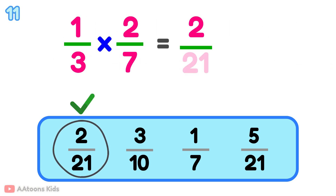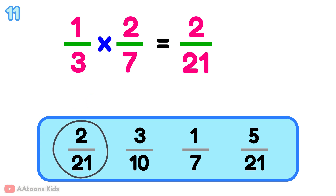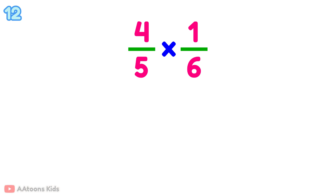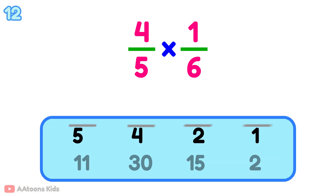6 over 21. What is 4 over 5 multiplied by 1 over 6?